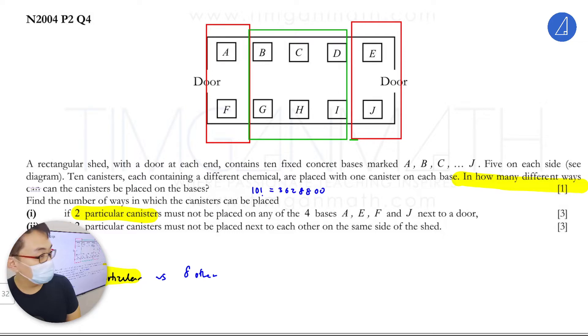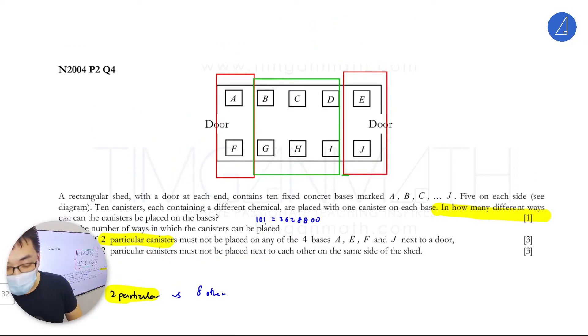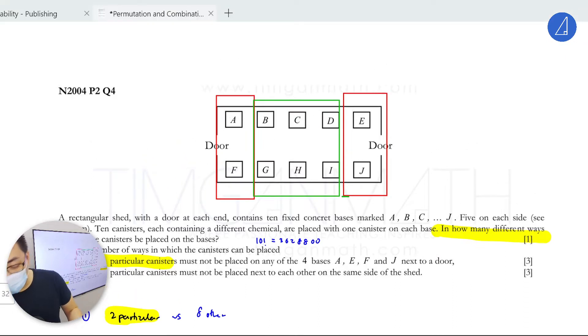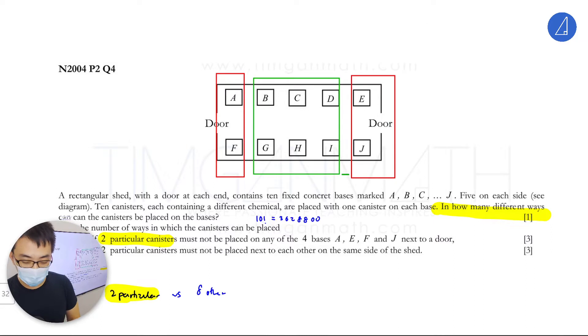This is six here. So what to do? First thing is, do you need to choose? Do you need to do 10 choose 2? No, you don't do 10 choose 2 because the two particular canisters are already fixed. You can put 2 choose 2 if you want. I'll just put 2 choose 2 here. Then after that, what to do?